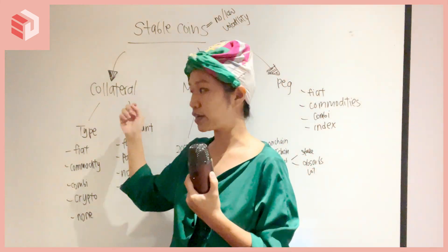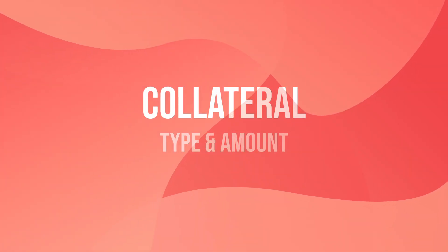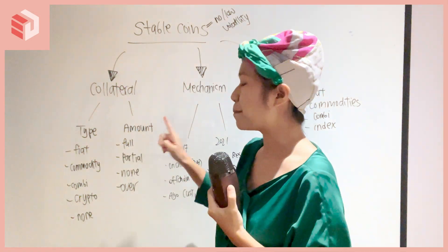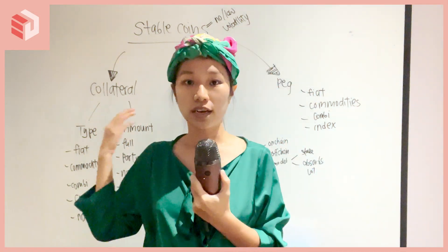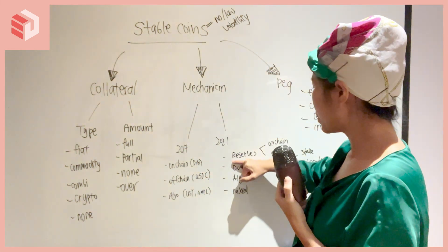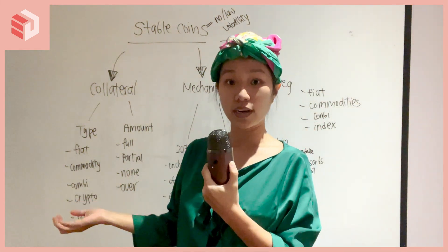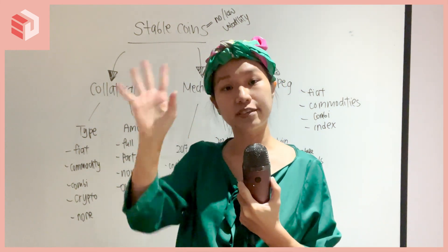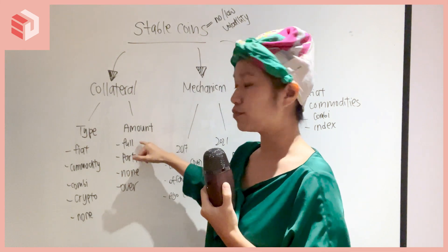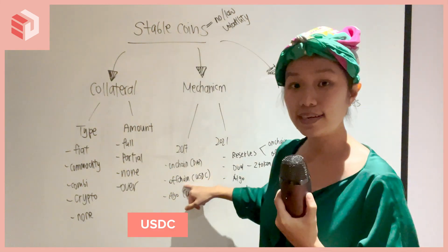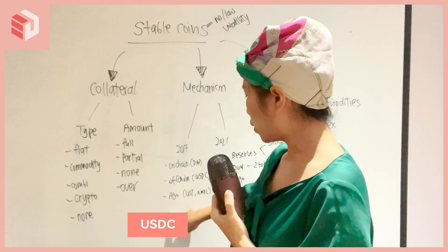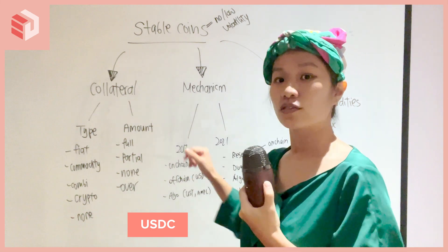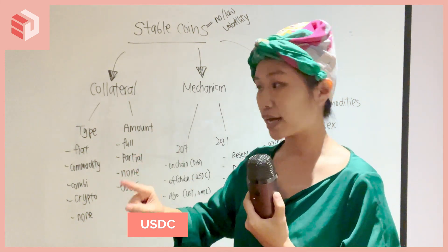Now let's move on to collateral, which is quite a big topic. We're looking at two classifications: the type of collateral and the amount of collateral. Collateral falls under the reserves aspect, but you don't always need collaterals. When we look at collateral amount, we have four main classifications. The first is full — 100% backed. With USDC, 100 US dollars in Coinbase's bank creates 100 USDC. So it's one-to-one, 100% backed.